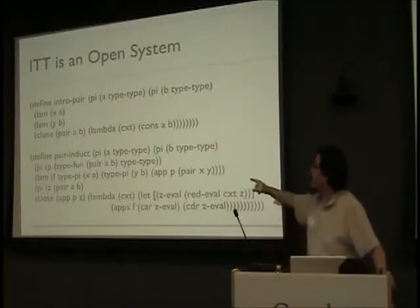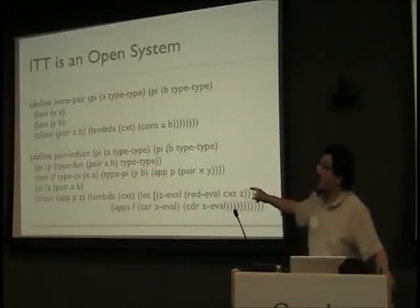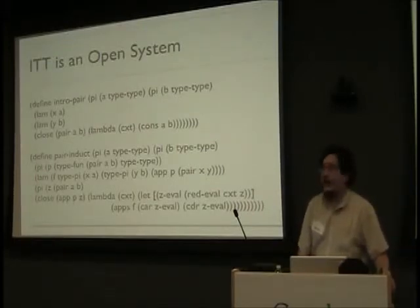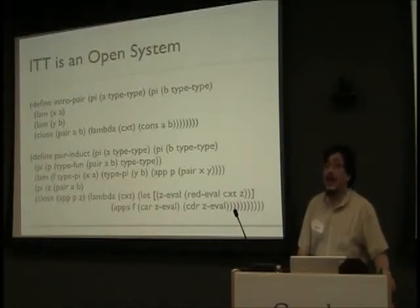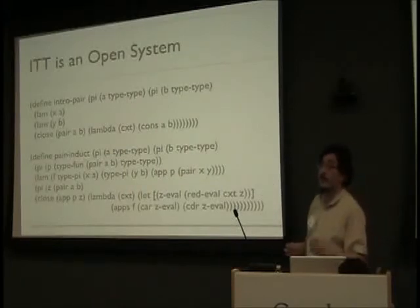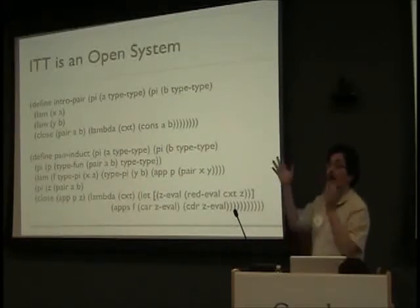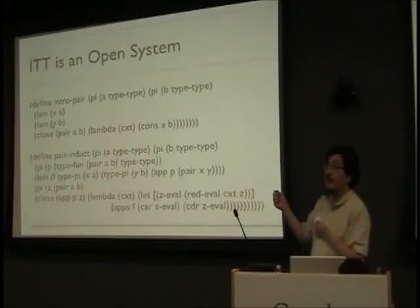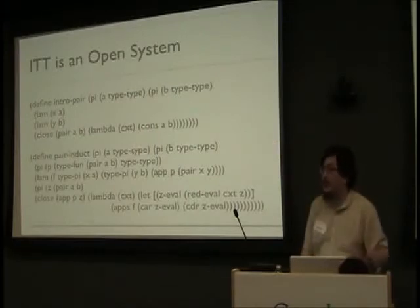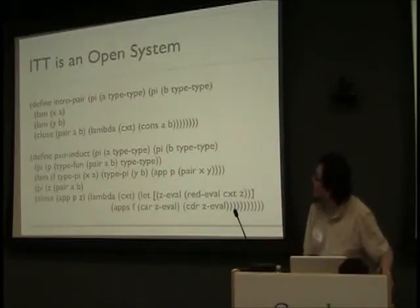This is basically uncurry — a very souped-up, well-typed uncurry. It says that in order to know how to act on a pair, you need to know how to act on the two components if they were given to you separately. To act on a pair of A comma B is the same as knowing how to take a function from A and get a function from B to your result. So this is a very souped-up, well-typed uncurry, is all that is.